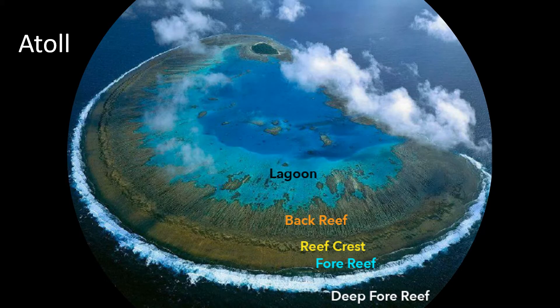Atolls are a type of reef that are ring-shaped and don't occur directly along the coastline. They create almost a circle enclosing a large lagoon in the center and are often described as donut-shaped reefs. They form as a volcano builds up over time and a reef forms around it; the volcano is then subducted, leaving the reef behind. For this reason, atolls often have layers of limestone and volcanic rock.